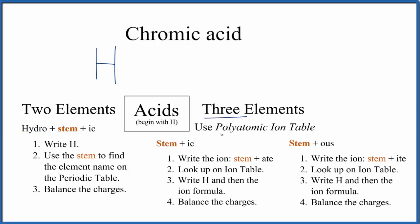We know we're going to have three elements and a polyatomic ion involved in the formula here for chromic acid. If we look at the stem, we have chrome, and then we have -ic.